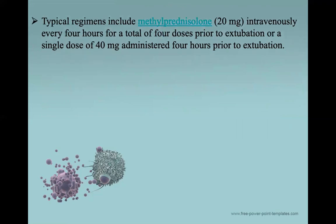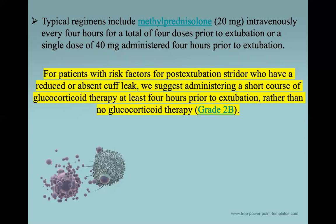If the patient has a negative cuff leak test — meaning we deflated the cuff and no air leaked around the tube — we must treat with corticosteroids to decrease laryngeal edema. The typical regimen includes methylprednisolone 20 mg IV every four hours for a total of four doses prior to extubation, or at least a single dose of 40 mg four hours prior to extubation. Guidelines suggest that for patients with risk factors for post-extubation stridor who have a reduced or absent cuff leak, a short course of glucocorticoid therapy should be administered at least four hours prior to extubation.